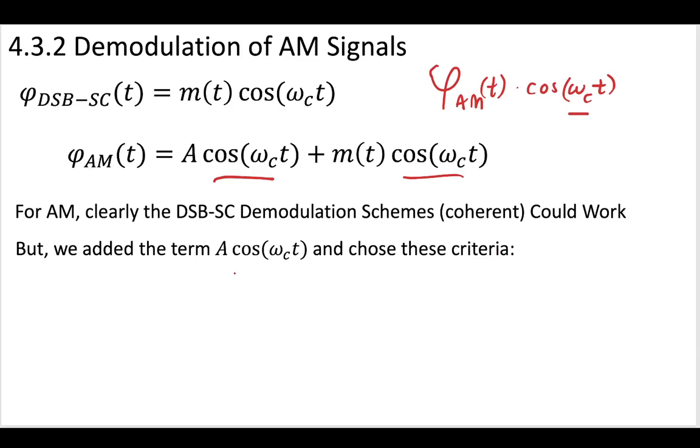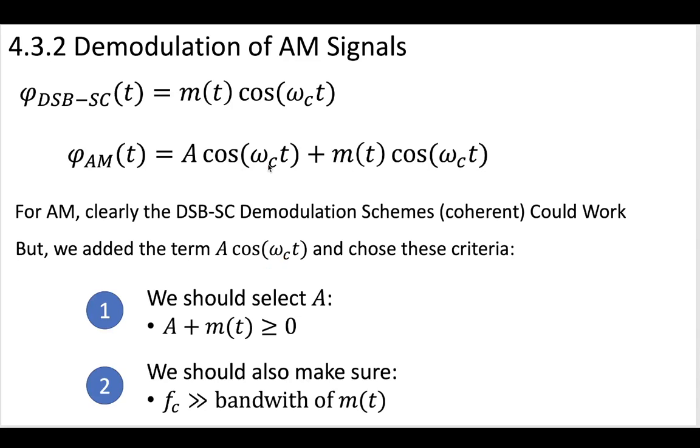However, we did add this term A cosine omega C out here in the front for a reason. And we chose these criteria when we added it. We said that our A should be large enough so that A plus m(t) keeps the message larger than zero at all times. And we should also make sure that the carrier frequency that we've selected is much larger than the bandwidth of our original message. If this first criteria is held, it's going to keep our mu between zero and one, where the closer we get to one, we've just barely lifted this message above zero. And when our mu is close to zero, this means that A has become a very large term, and you may be spending a lot of money on a lot of extra A.